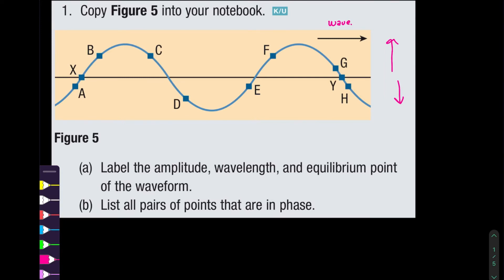At one specific moment in time, the maximum displacement is given by the three points I marked in pink — those are the maximum displacements. The maximum displacement is measured from the equilibrium line, which is what we call the amplitude. The equilibrium line runs along this axis here, so we can label the green line as the equilibrium line.